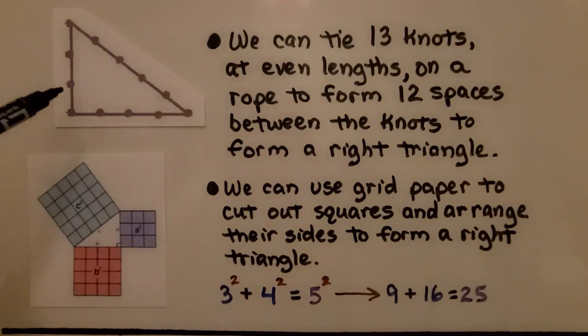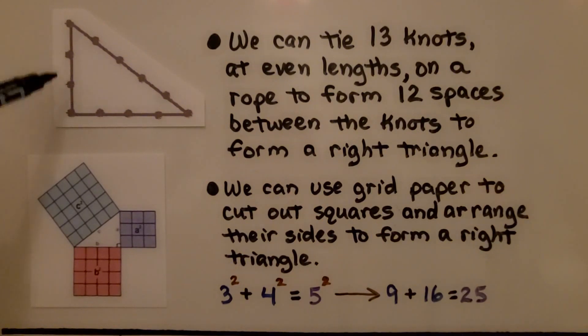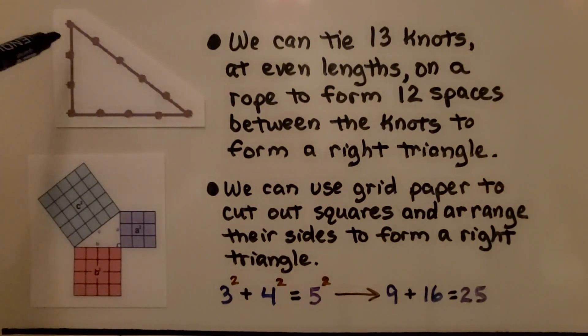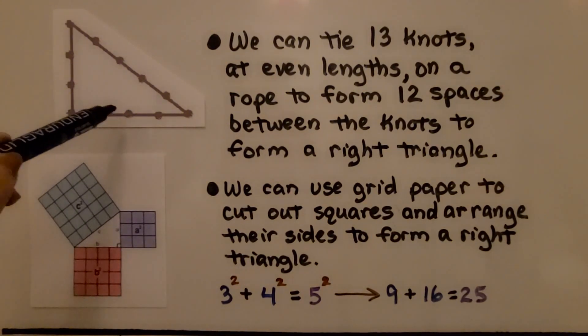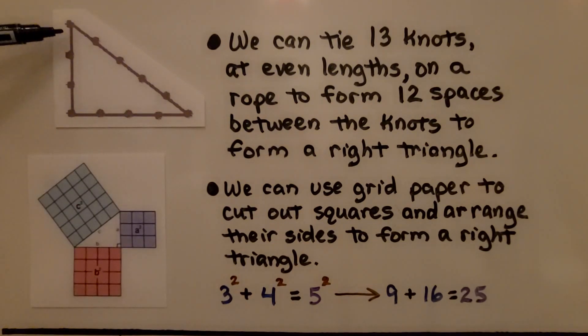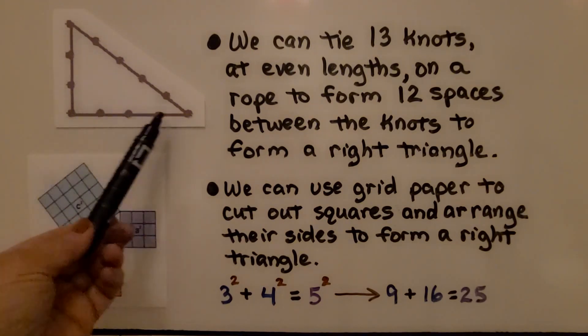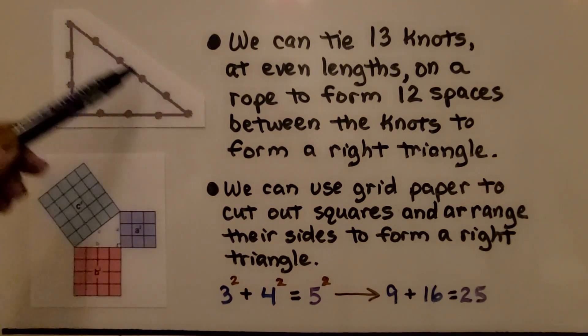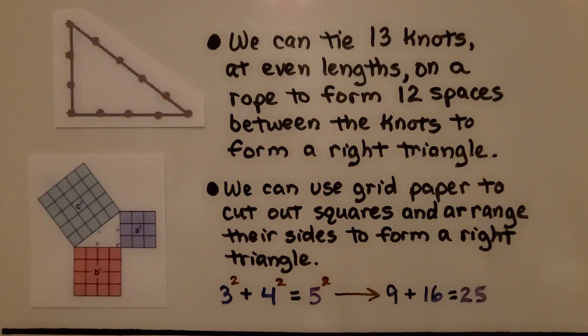We can tie 13 knots at even lengths on a rope to form 12 spaces between the knots to form a right triangle. We have 3 spaces between the knots, 4 spaces here, and 5 spaces here for 3, 4, 5.